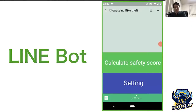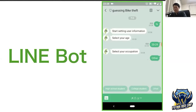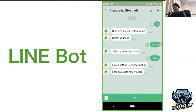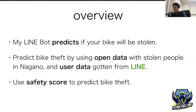Now that my self-introduction is over, I will talk about LimeBot. LINE is a messenger application released by LINE Corporation. Almost all Japanese use LINE — I think it is like WhatsApp. My LimeBot predicts if your bike will be stolen using open data of stolen people in Nagano and user data from LINE. The LimeBot uses a safety score to predict bike theft, which is a key concept of this presentation.